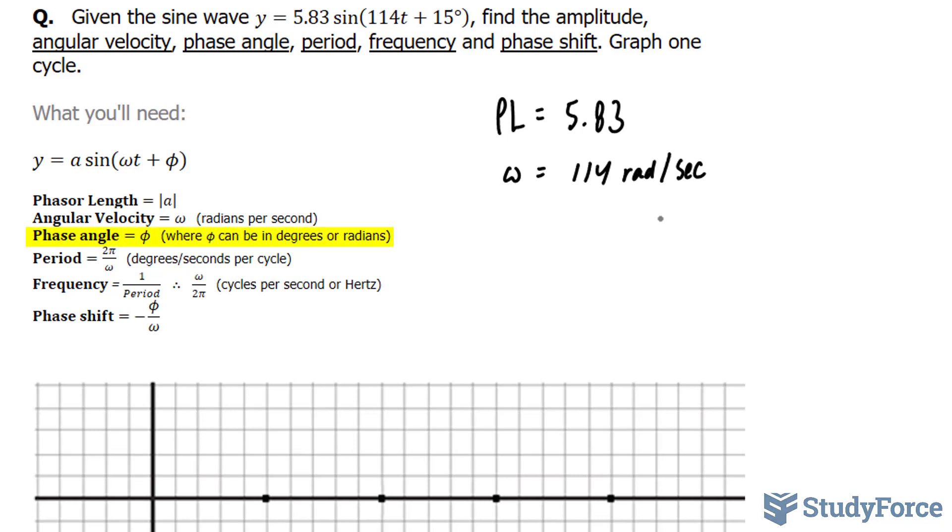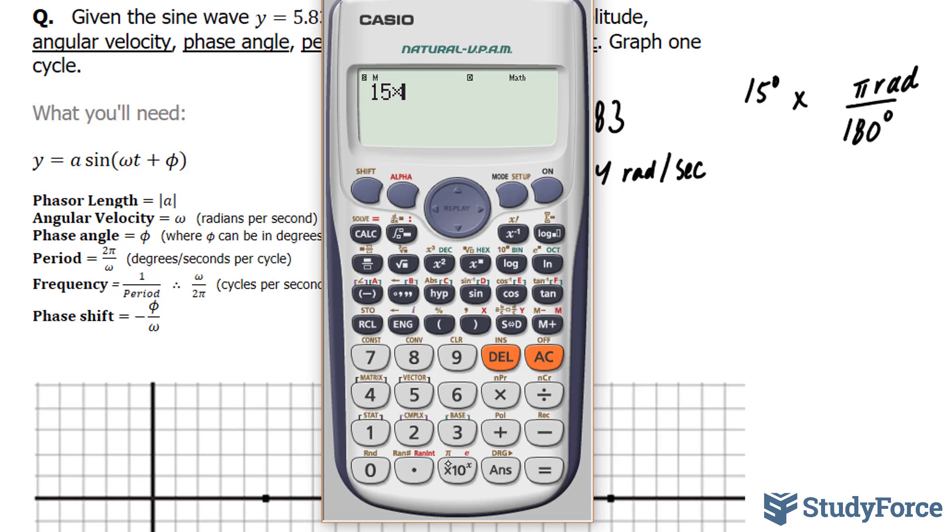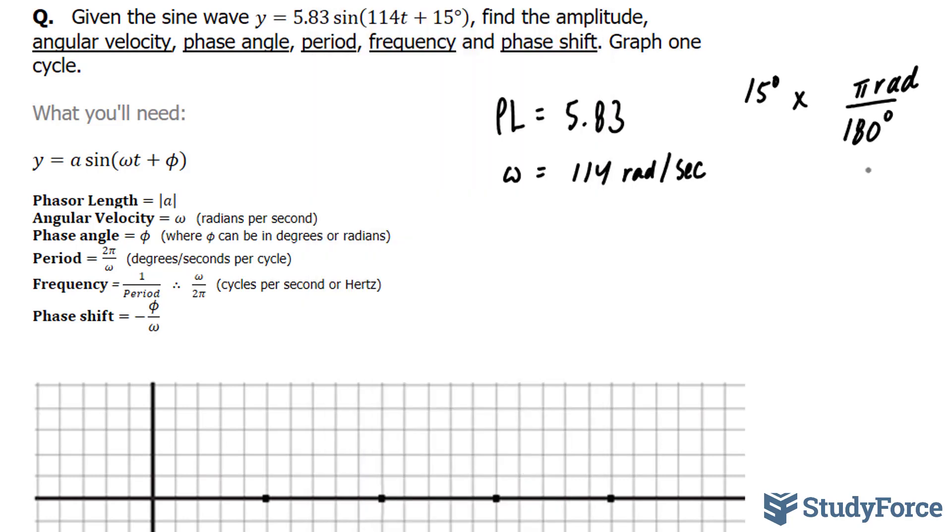The phase angle, represented by this Greek letter phi, needs to be either in degrees or radians. Now, since our angular velocity is in radians, we should also convert this 15 degrees into radians, just to be consistent. So 15 degrees times, there are 180 degrees per every pi radians. Using our calculator, 15 times pi divided by 180, this gives us pi over 12, pi over 12 radians. Therefore, phi, phase angle, is pi over 12.